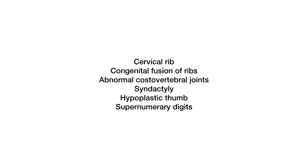Further musculoskeletal abnormalities include abnormal costo-vertebral joints, syndactyly, hypoplastic thumb, and supernumerary digits.